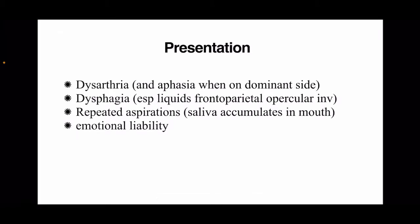Patients with pseudobulbar palsy present with dysarthria and aphasia — aphasia because it is a cortical lesion. There is dysphagia, especially to liquids, particularly with frontoparietal opercular involvement. Repeated aspirations occur as saliva accumulates frequently in the mouth. Lastly, emotional lability — the pseudobulbar effect — is present, where emotions are affected due to the cortical lesion. Features resemble bulbar palsy, but in addition there is UMN-type weakness, aphasia, and emotional lability not seen in bulbar palsy.